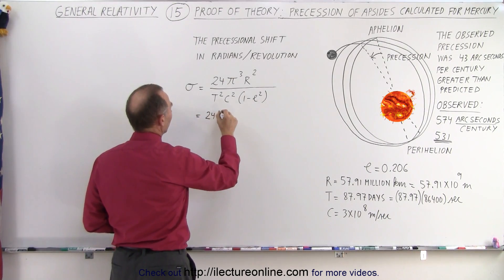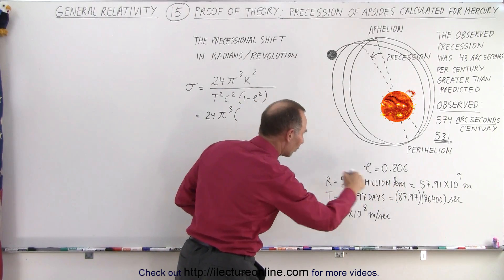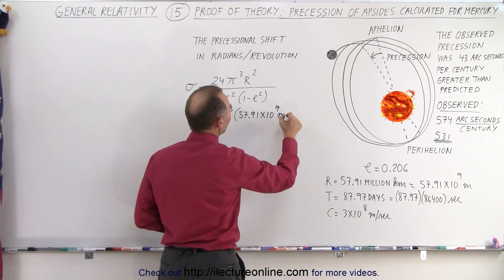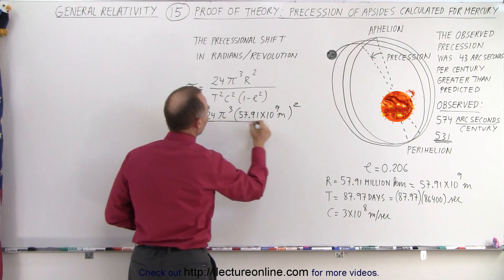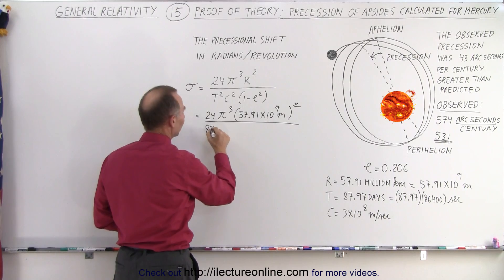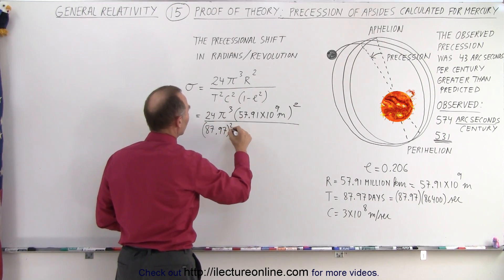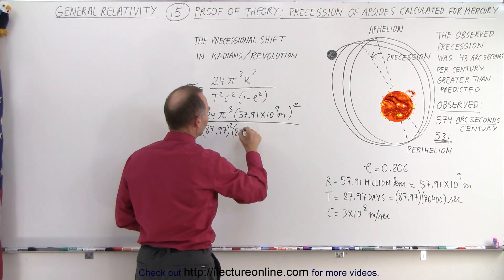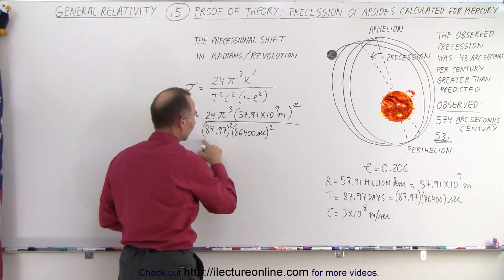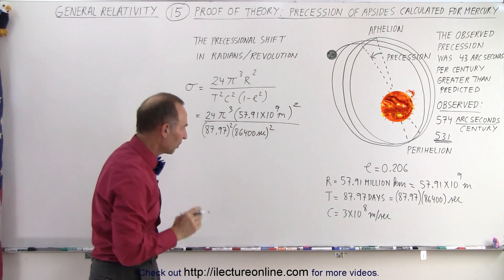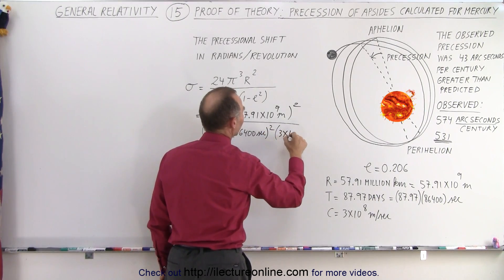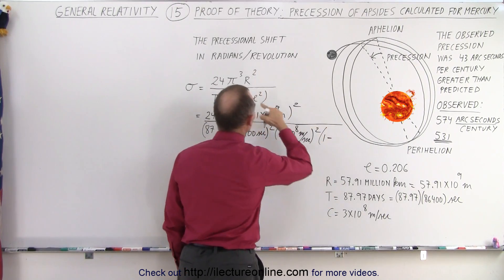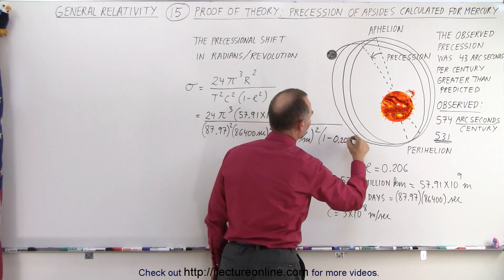So this is equal to 24π³ times the radius. The radius is going to be 57.91 × 10⁹ meters. That's how many billions of meters. We have to square that, divided by the period. So the period will be 87.97. We need to square that, and then we have 86,400 seconds. We have to square that as well. So together, that forms a number of seconds for each orbit, the period. We have to square the period. Speed of light squared, 3 × 10⁸ meters per second squared. And then we have the quantity 1 minus E squared. E is eccentricity, 0.206 quantity squared.